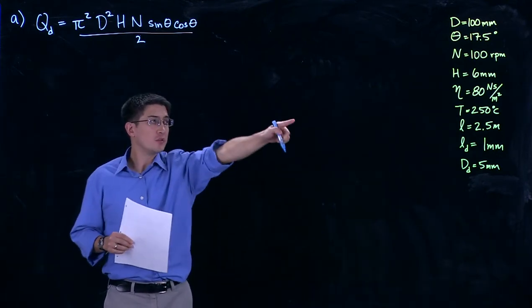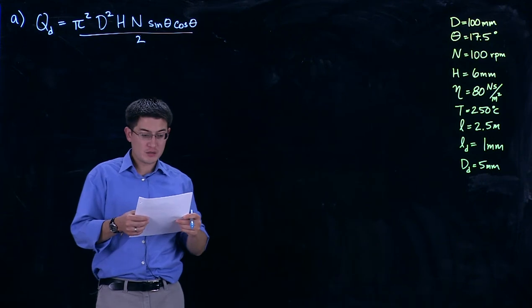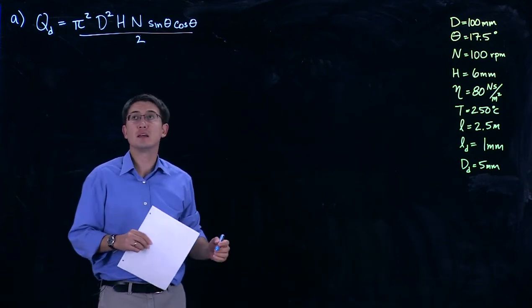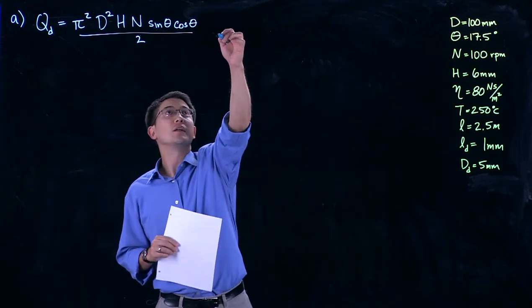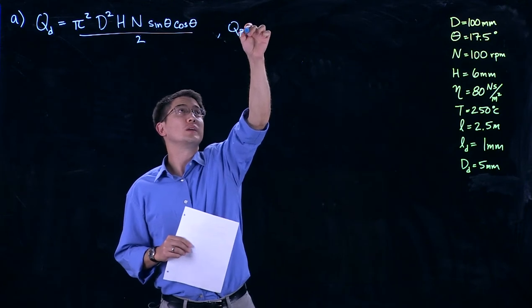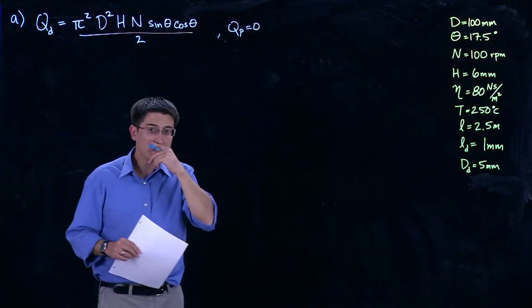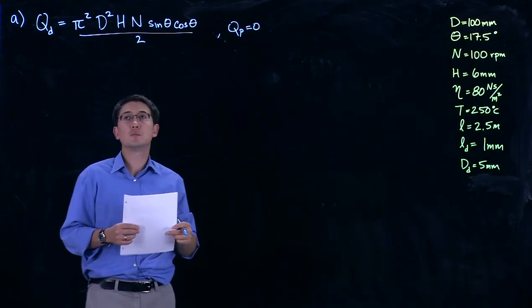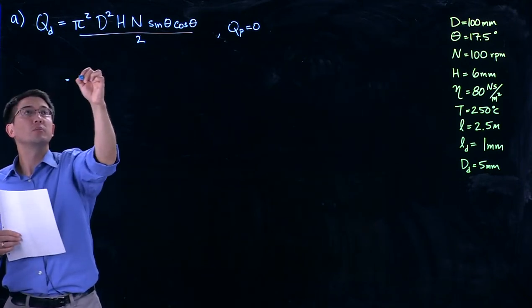We have all of the variables that we need over here. We simply just need to plug this in. Without a die on the end of this, Qp is going to be zero. There's no pressure flow. So we can plug this in.